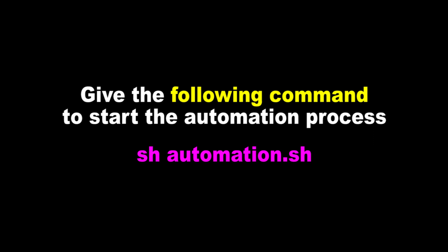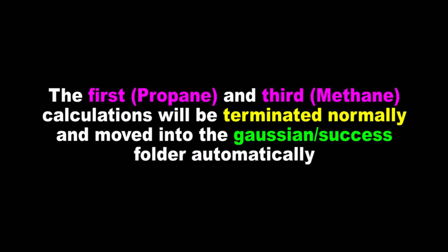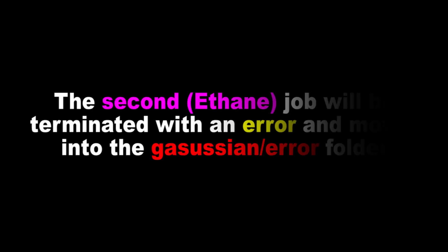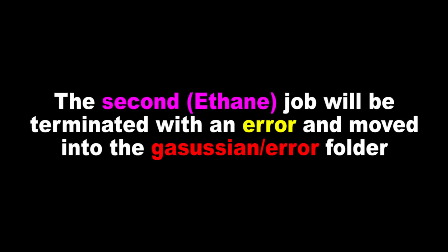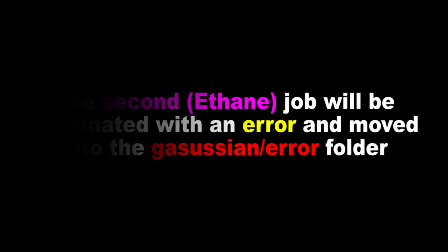Give the following command to start the automation process. The first and third calculations will be terminated normally and moved into the success folder automatically. The second job will be terminated with an error and moved into the error folder.